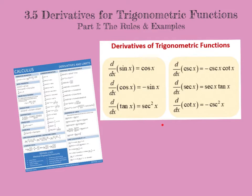Here are the six rules for our six trig functions. The derivative of sine is cosine. The derivative of cosine is negative sine. The derivative of tangent is secant squared. The derivative of cosecant is negative cosecant cotangent. The derivative of secant is secant tangent. And the derivative of cotangent is negative cosecant squared x. Half of them are negative — the ones that start with 'co': cosine, cosecant, and cotangent all have negative derivatives. If it doesn't start with 'co', like sine, tan, and secant, then it's not a negative derivative.